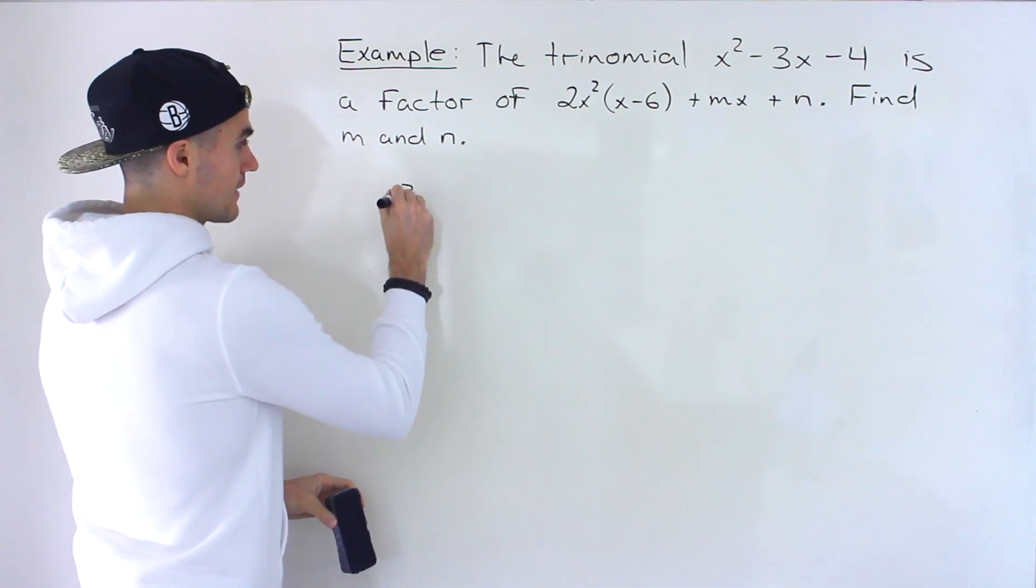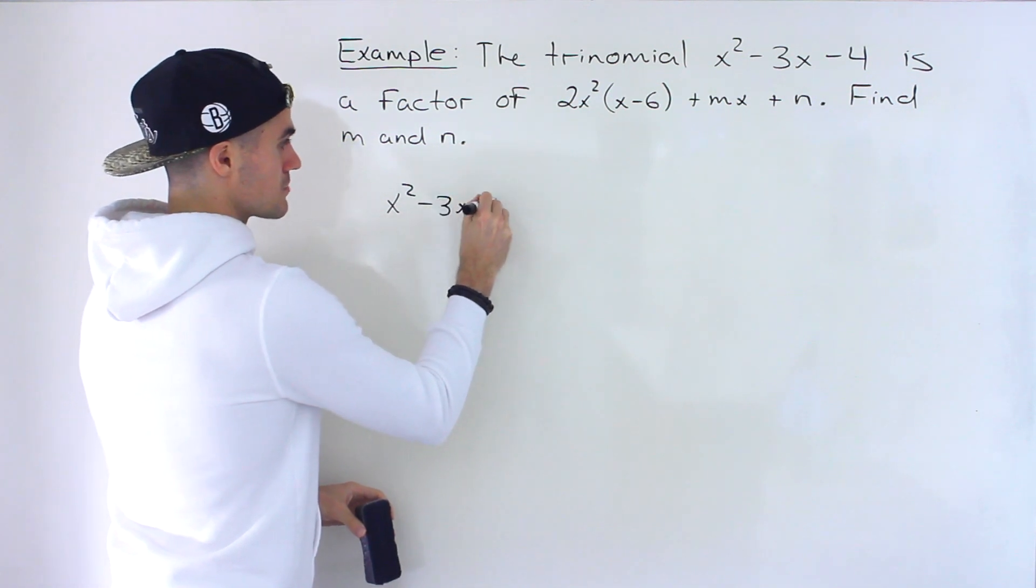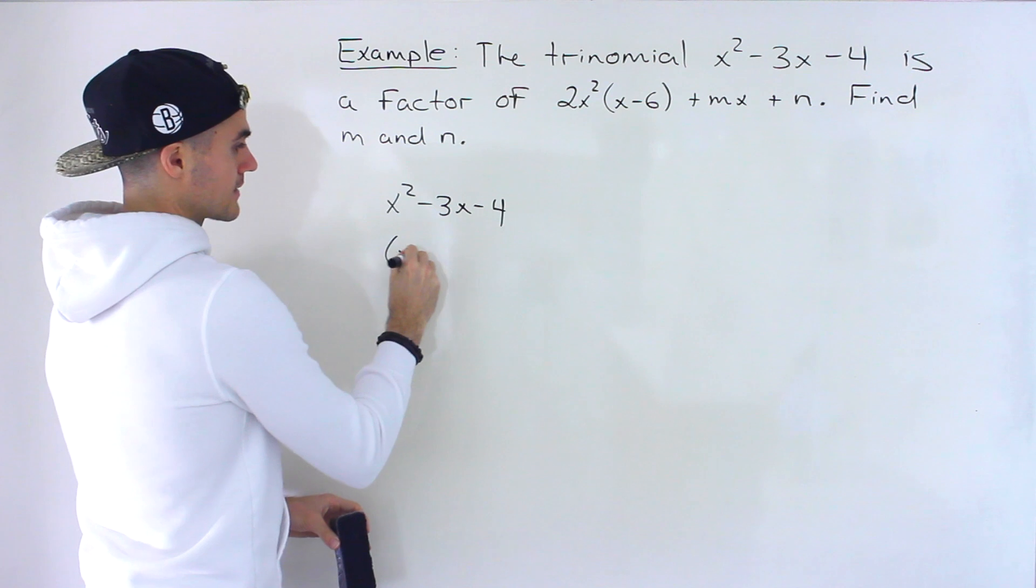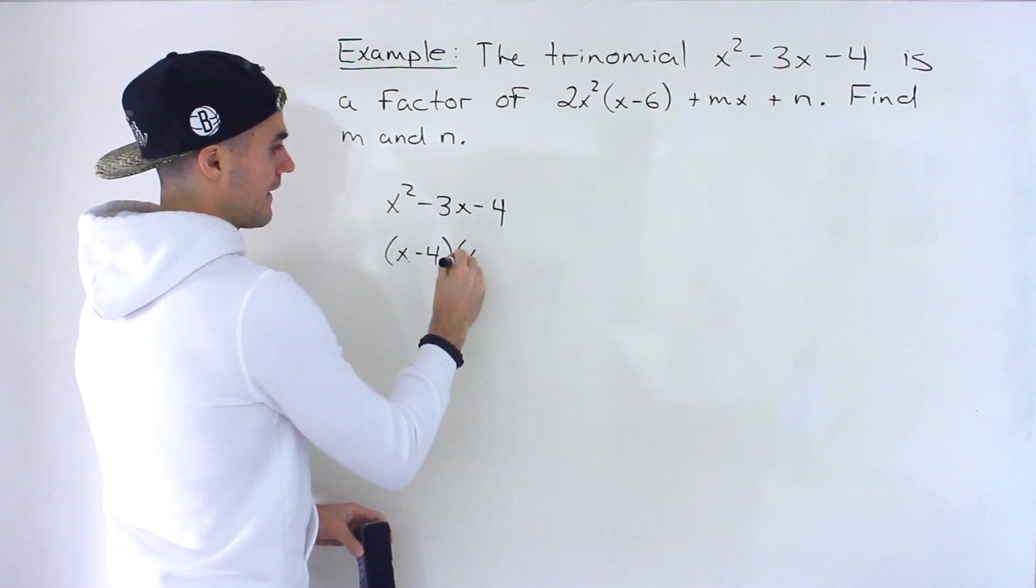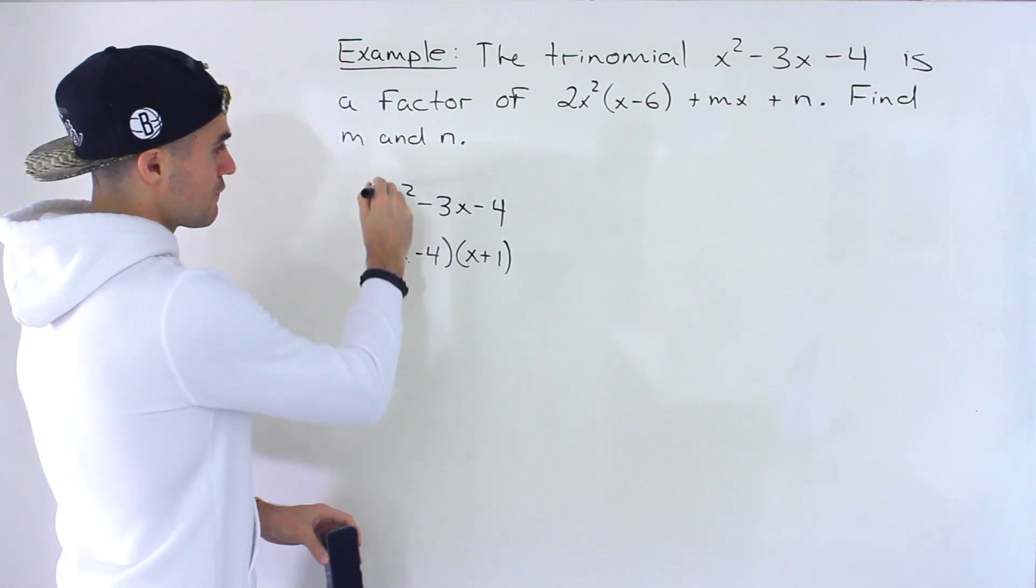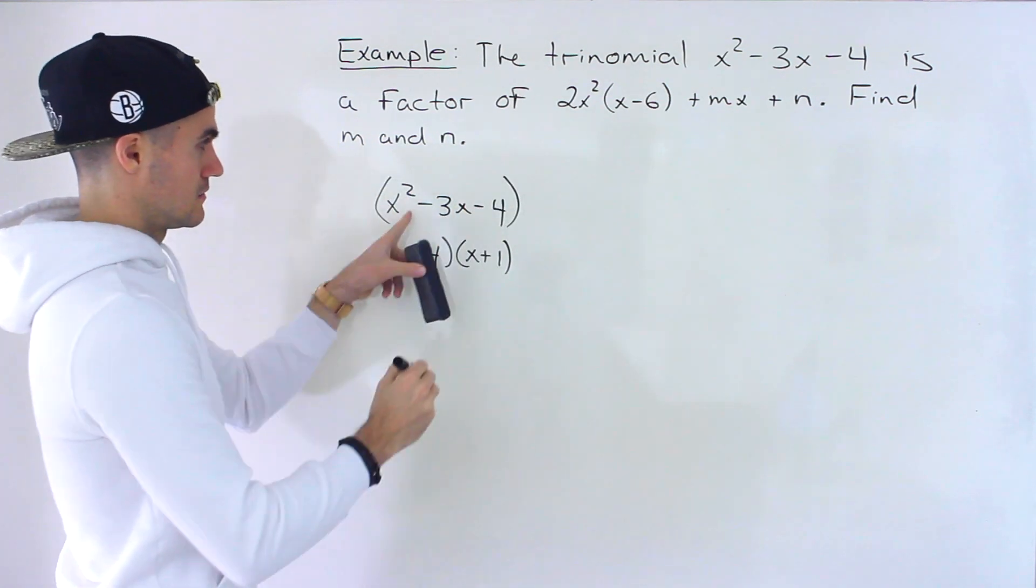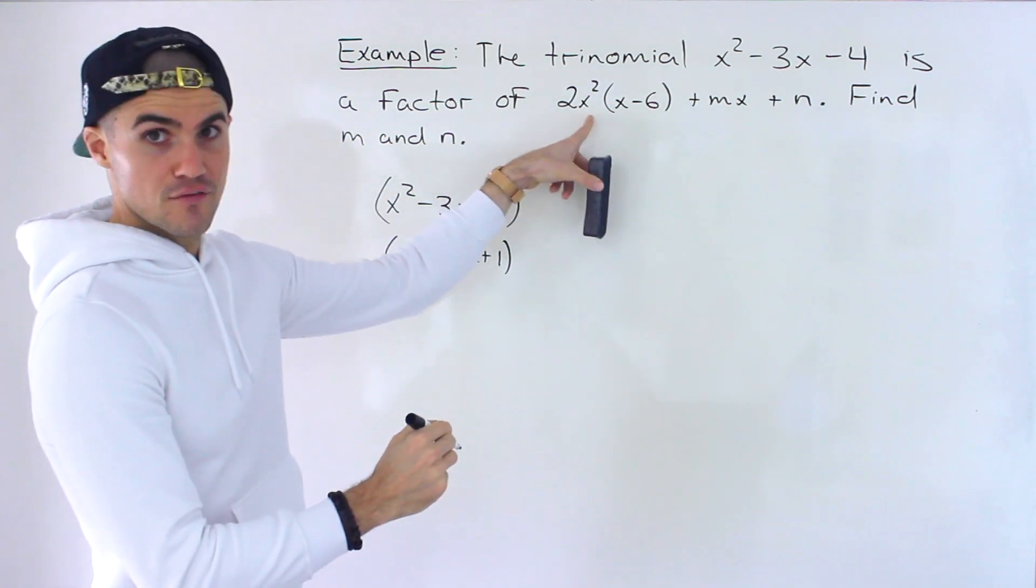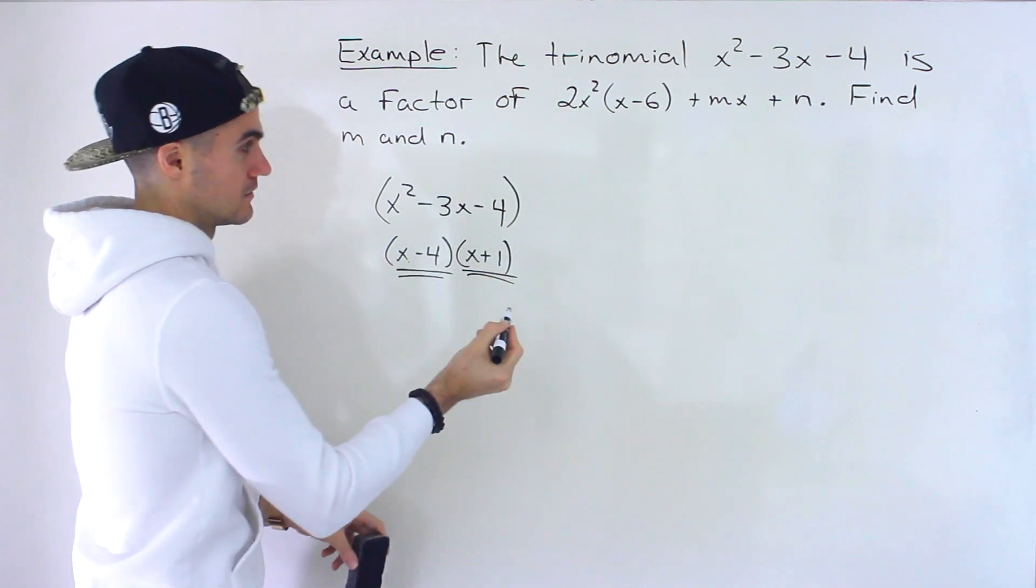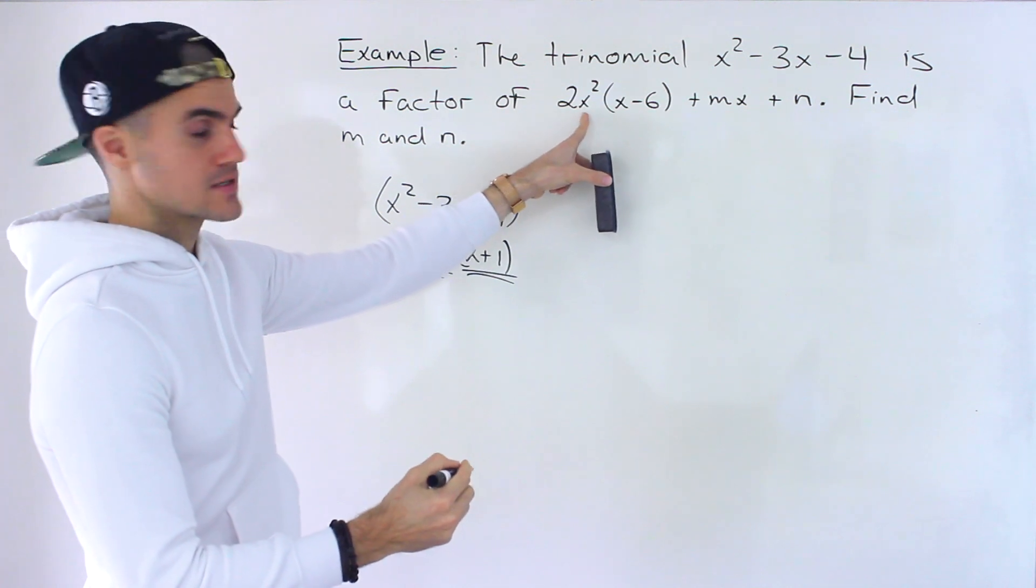So x squared minus 3x minus 4 actually factors into x minus 4 times x plus 1. And so if this is a factor of this then it also means that this and that are factors of this.